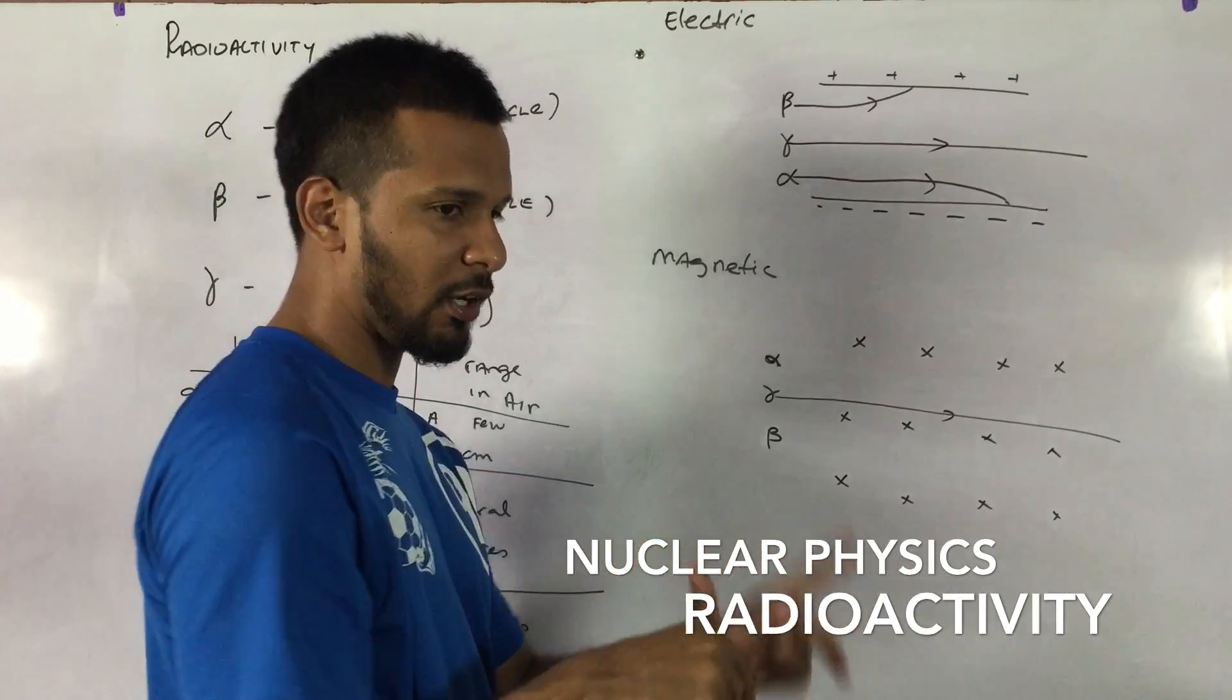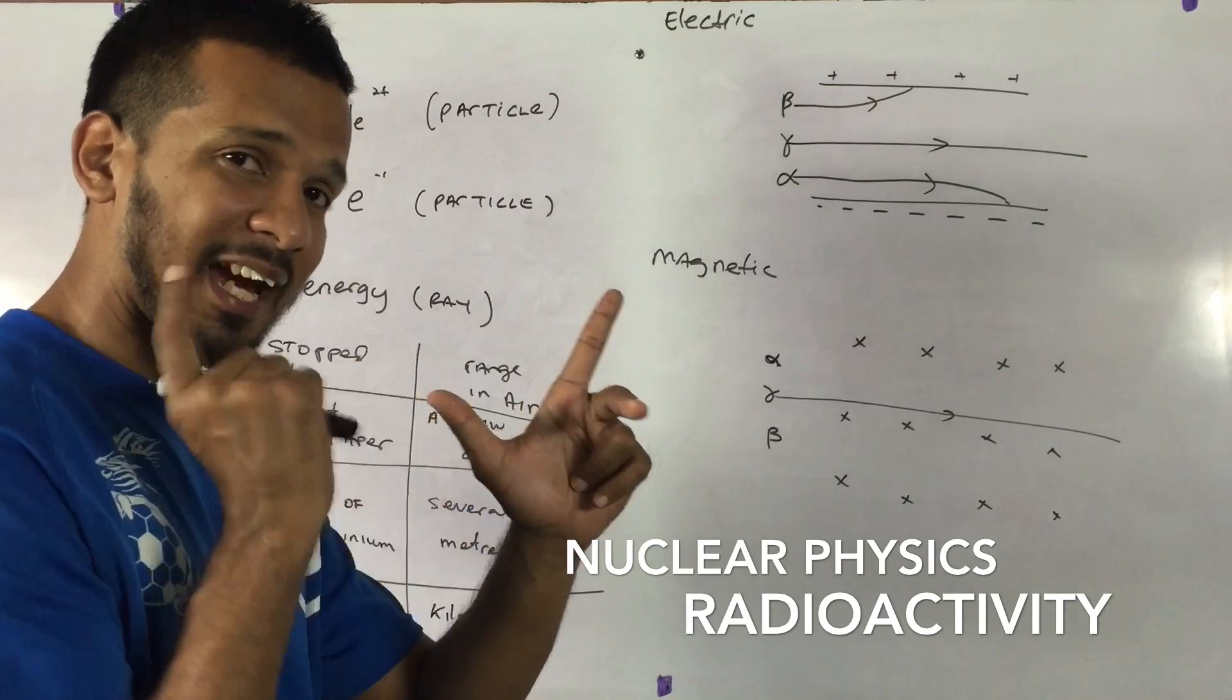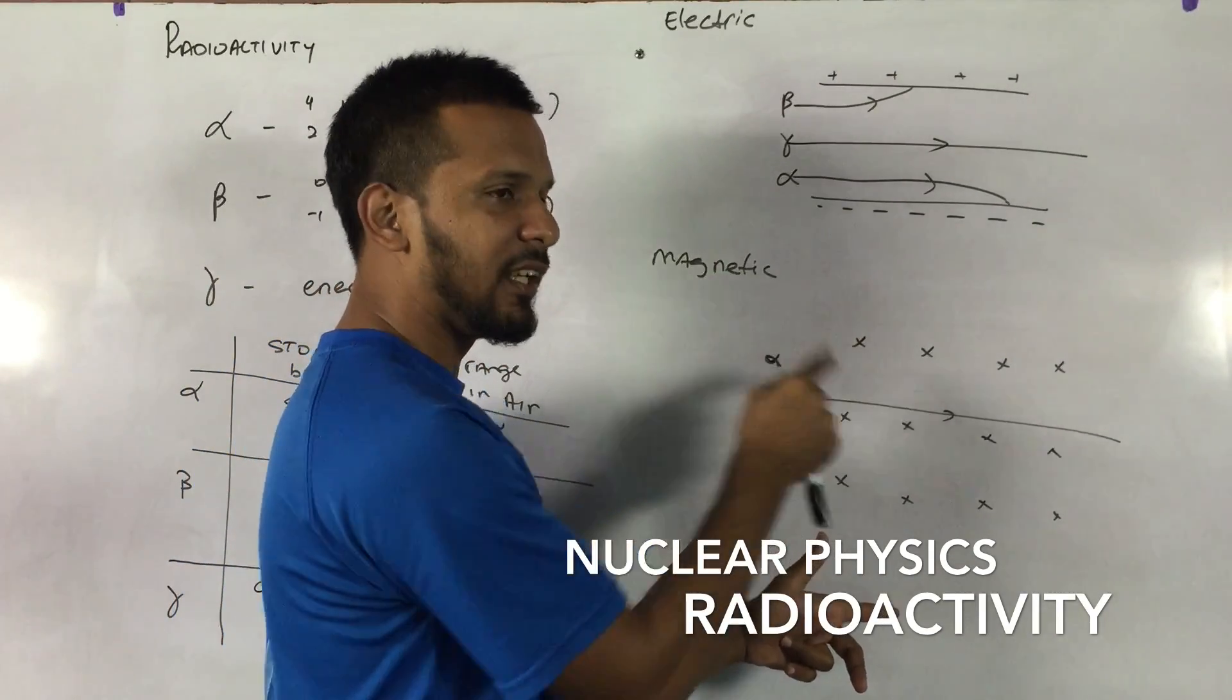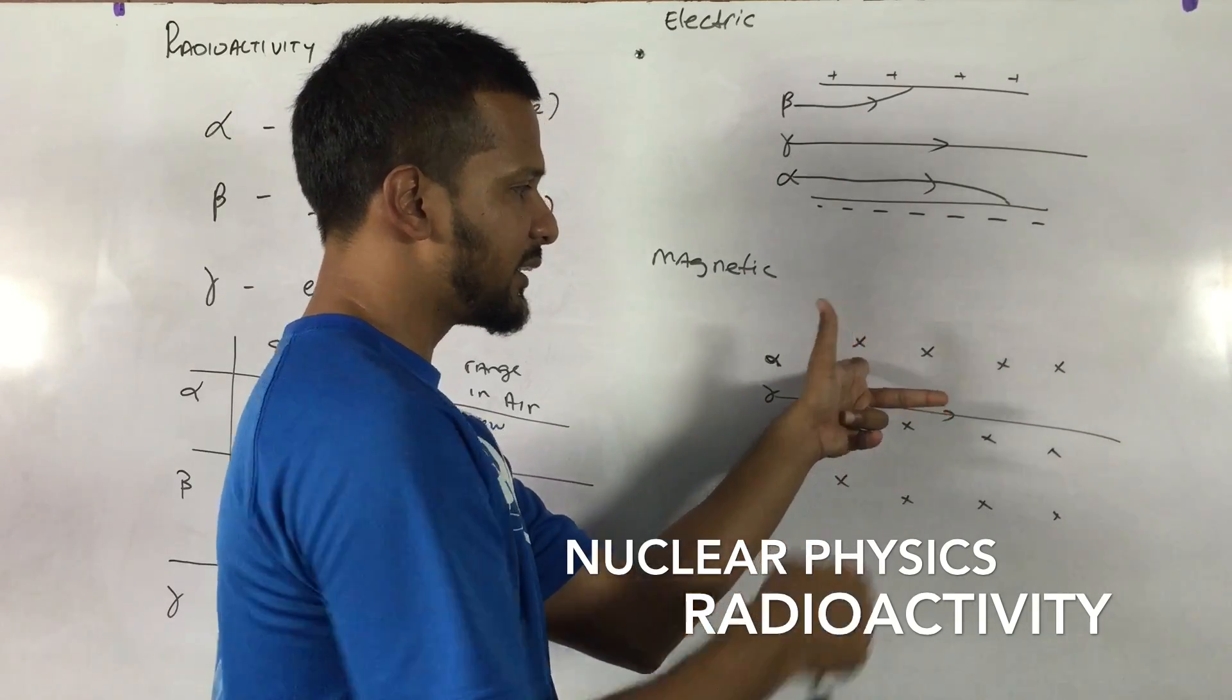Remember, Fleming's left hand rule is for direction. It gives you the direction. Magnetic field cross means inwards. So the magnetic field is inwards.